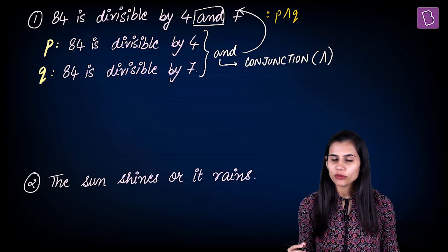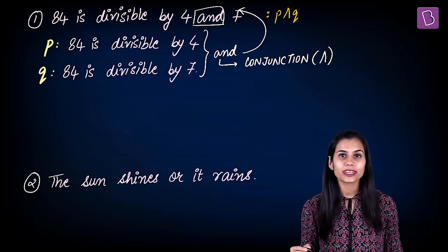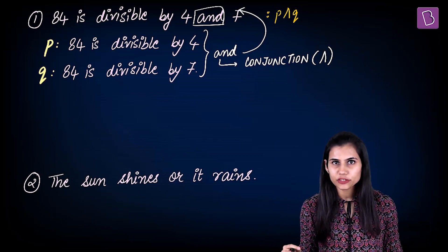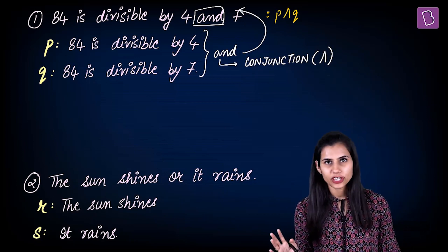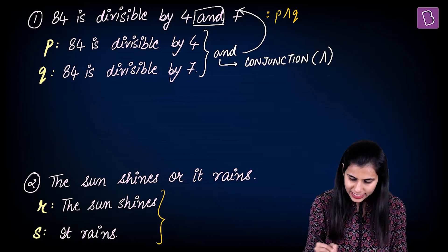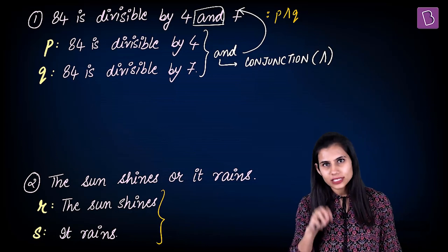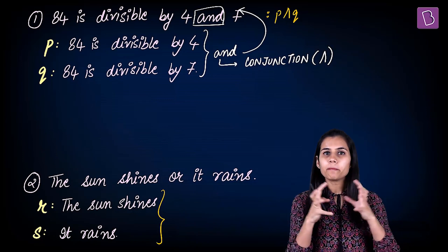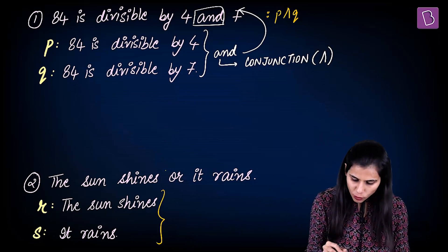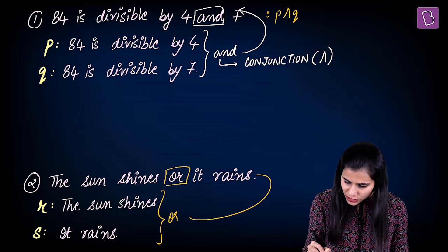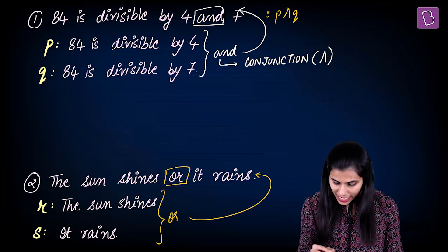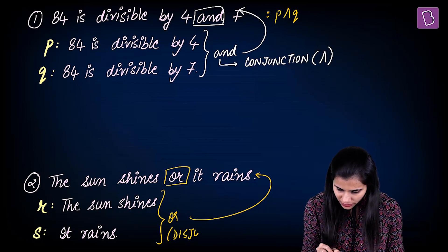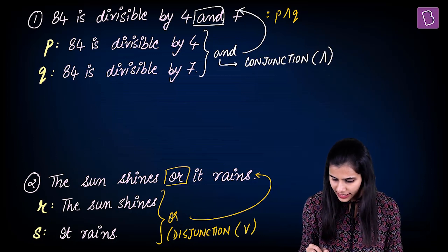Similarly, consider this example: 'The sun shines or it rains.' This is again a compound statement formed with two simple statements — 'the sun shines' and 'it rains.' Both these component statements R and S are combining together with the help of the word OR, giving rise to this original compound statement. Another name for OR is disjunction, and the symbol used to denote it is V.